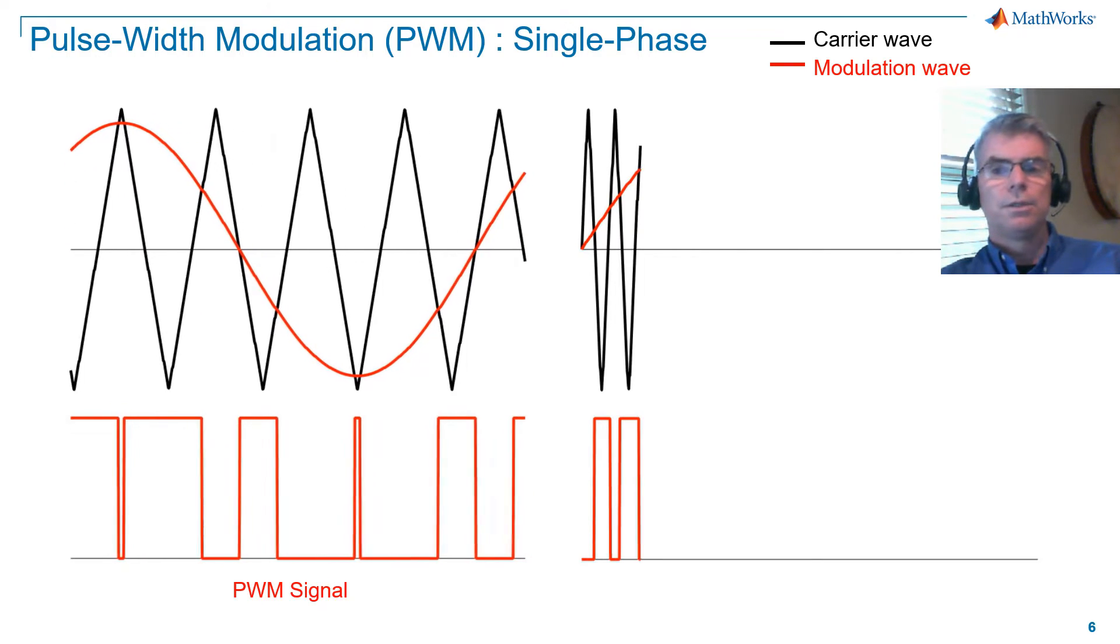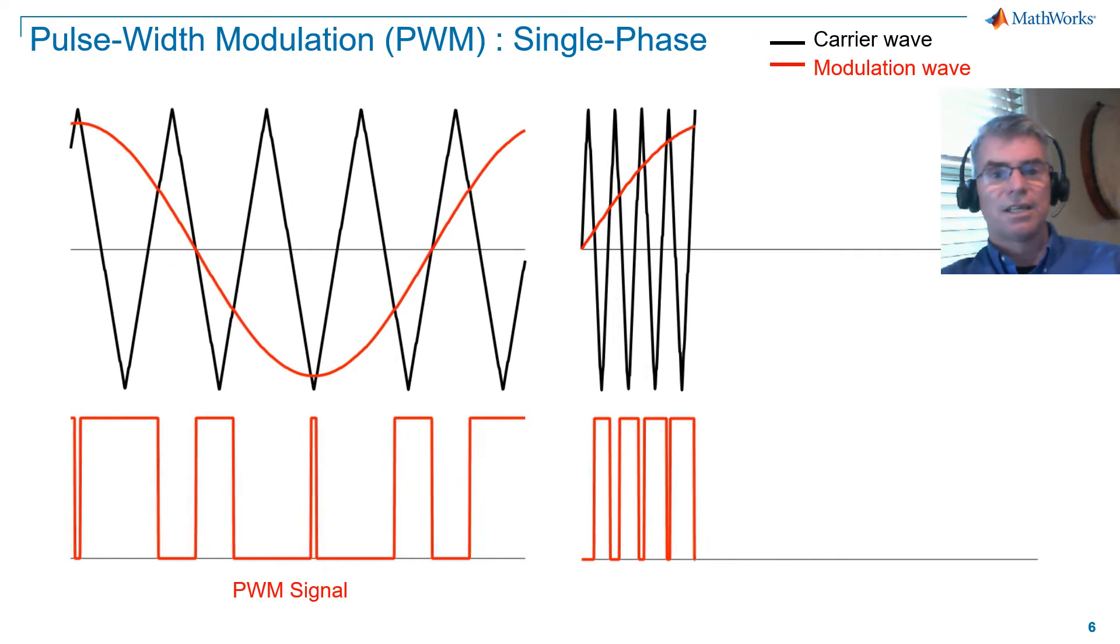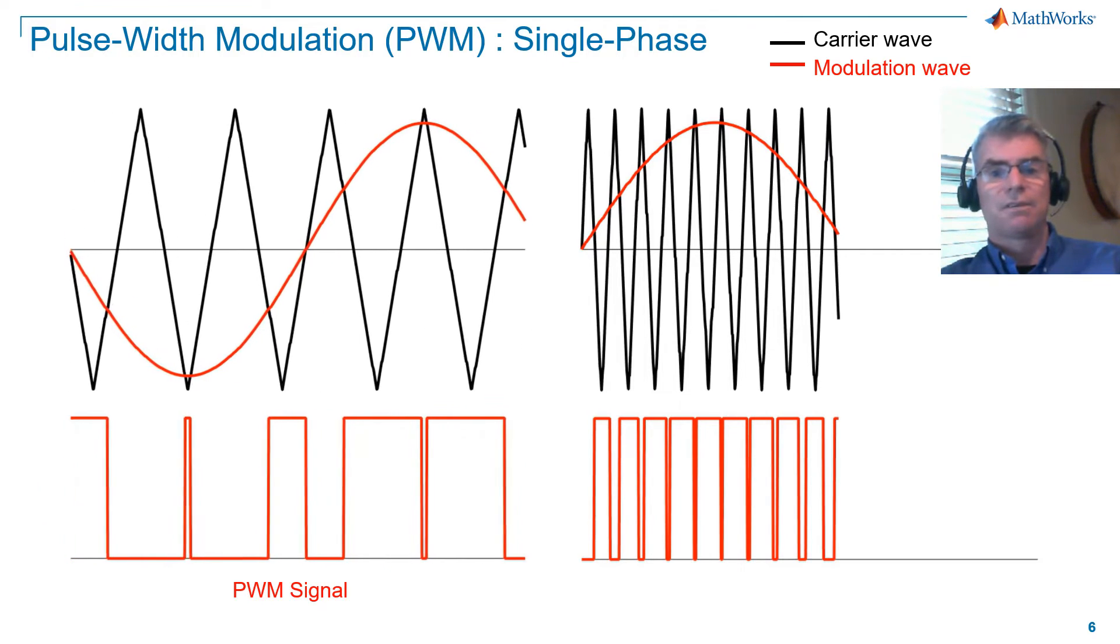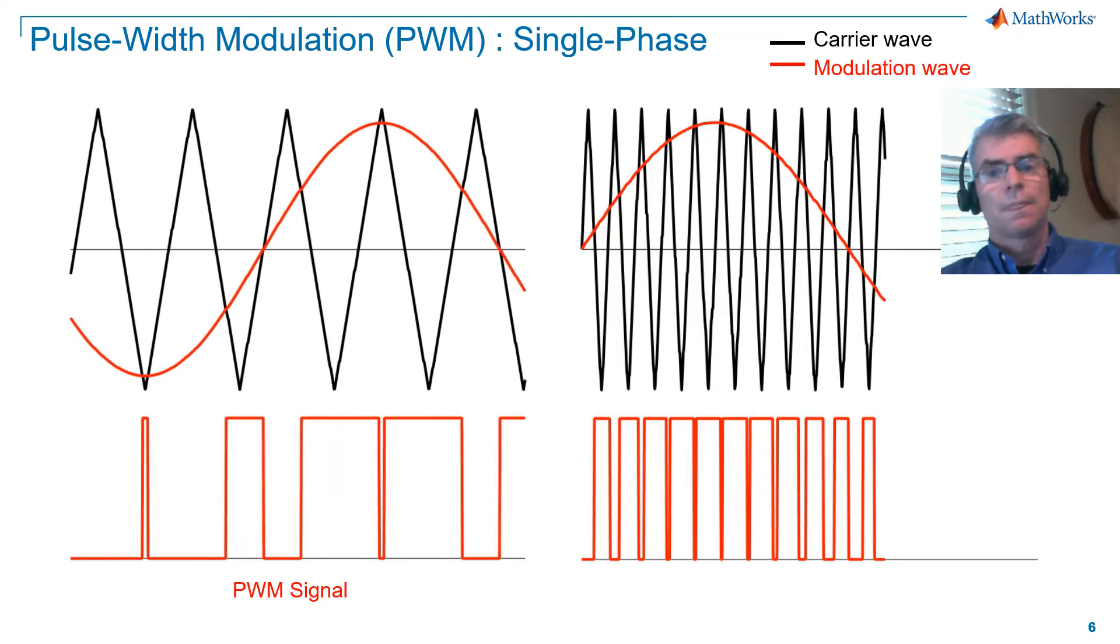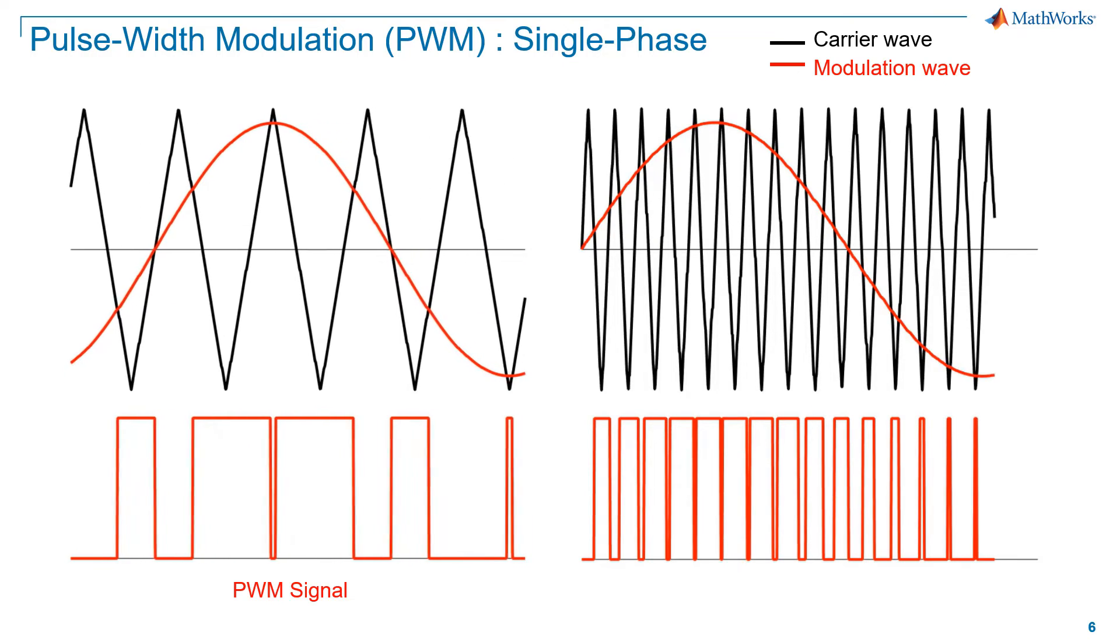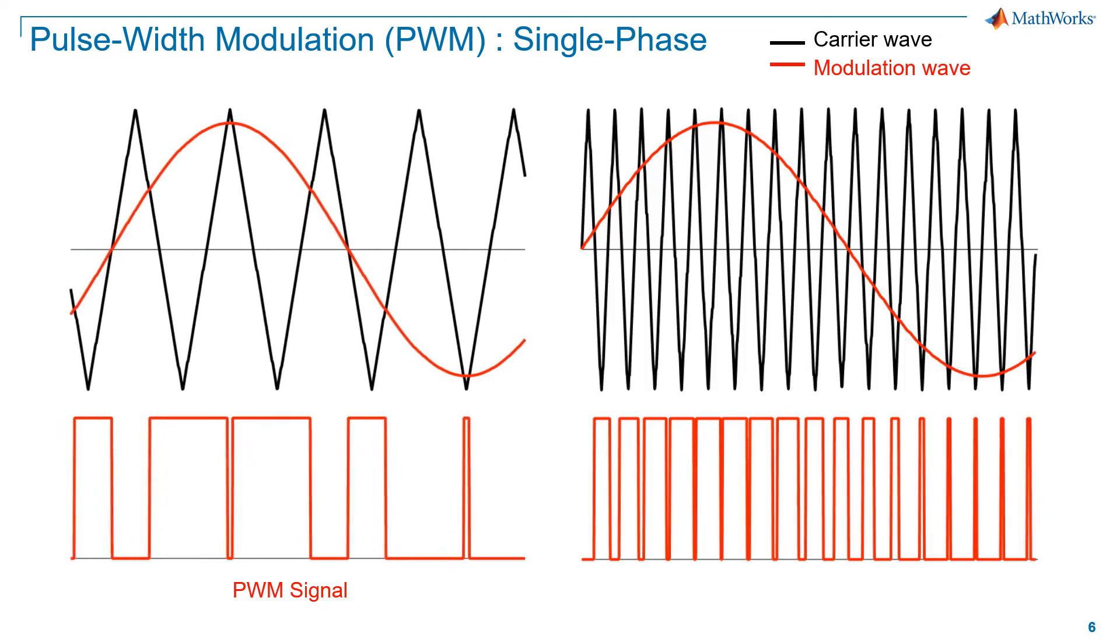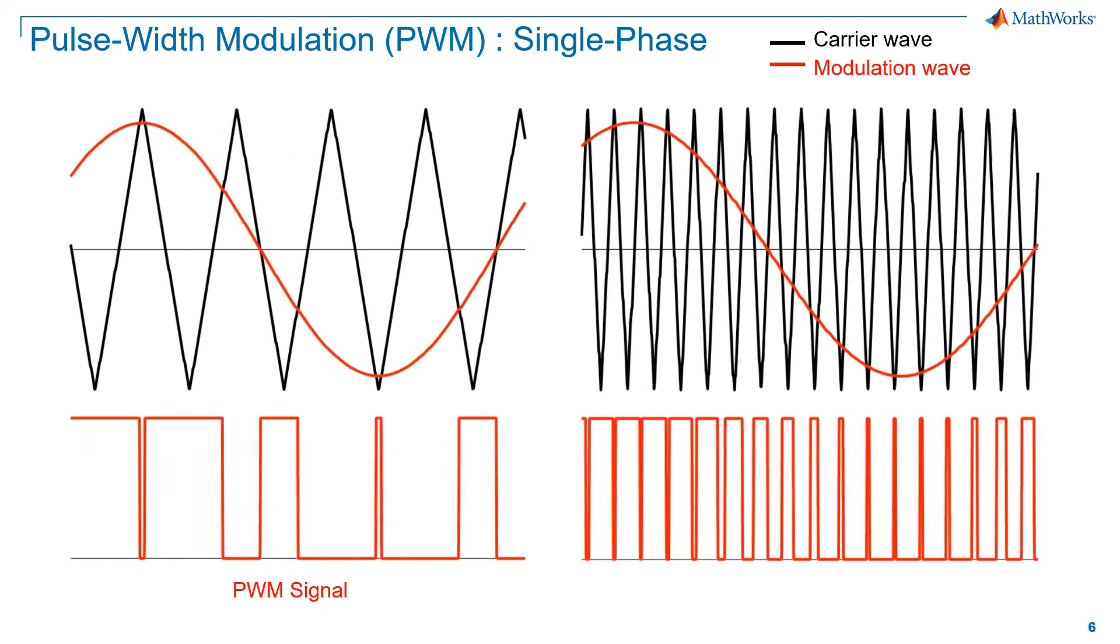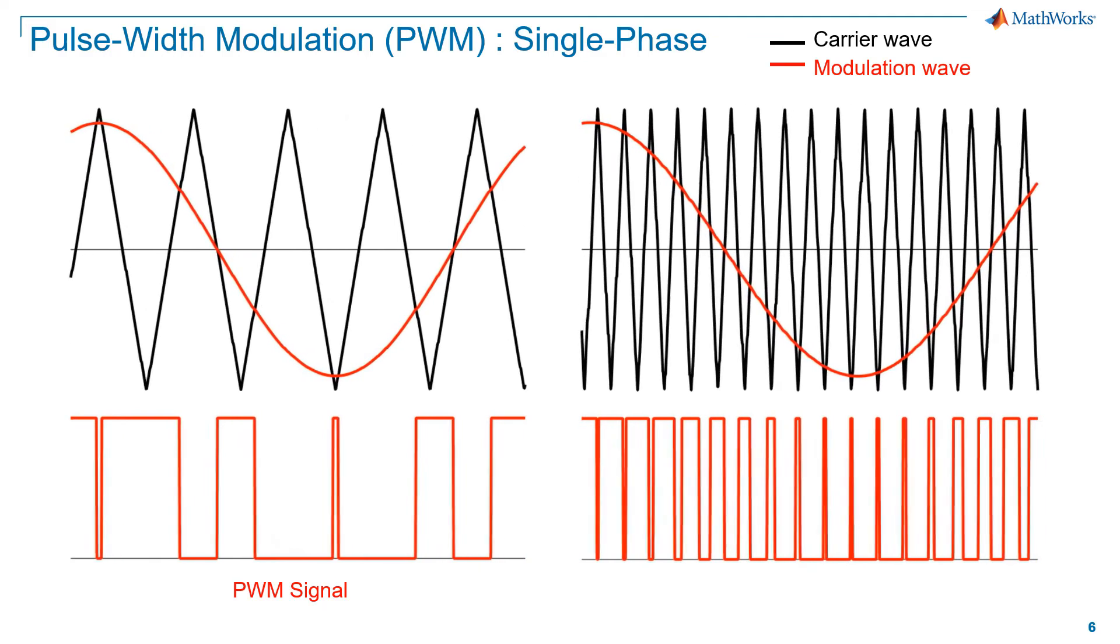On the right, you can see the effect of increasing the carrier frequency by a factor of four in this case. Higher carrier frequencies are more desirable, as they provide more resolution in the encoding of the sinusoid. In practice, much higher carrier frequencies are used than I'm showing here, and keeping the carrier frequency relatively low for visualization reasons.